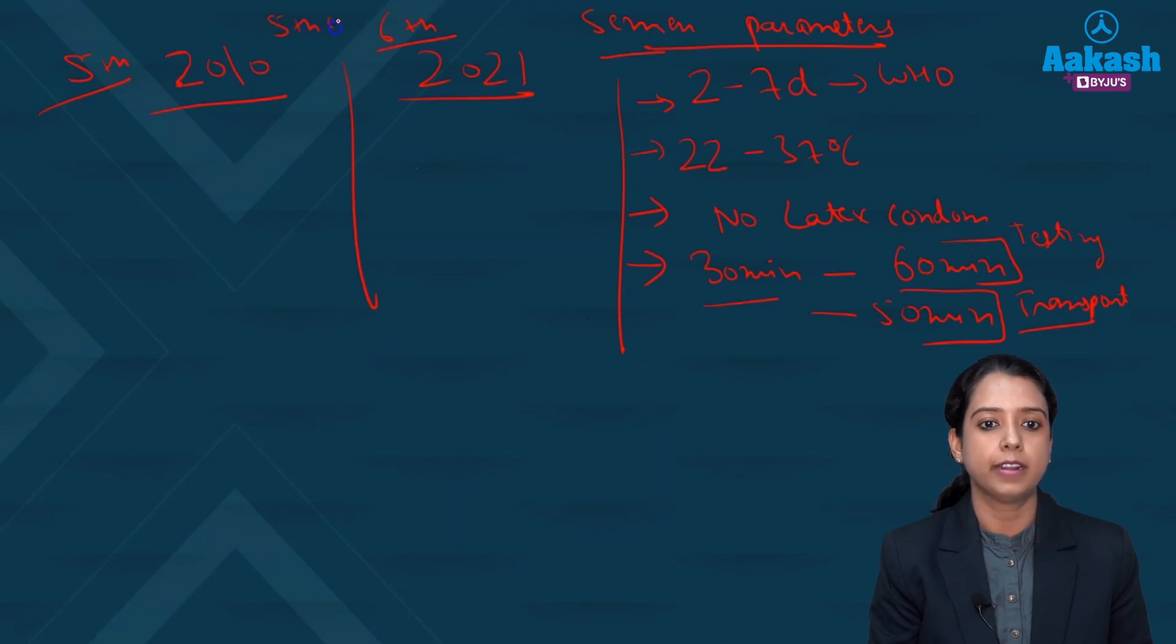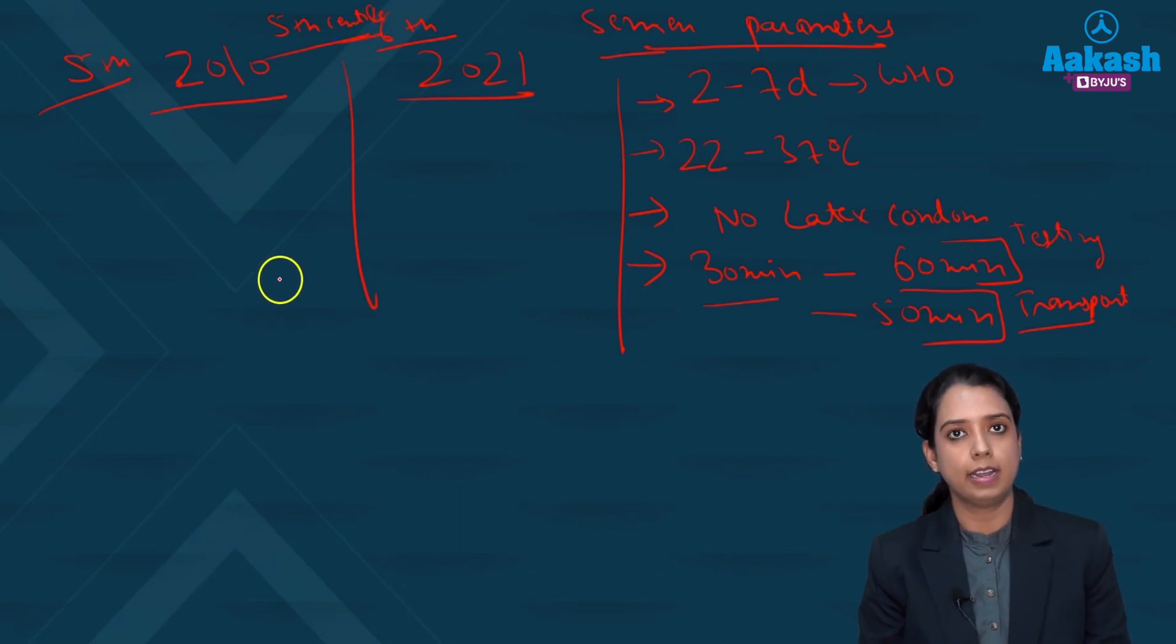The cutoff is generally the fifth centile in both the editions. Everything below fifth centile in semen parameters is abnormal. Everything above fifth centile - so you have taken 100 men - so everything which falls below the fifth centile of that 100 men is abnormal. Everything above that is normal.